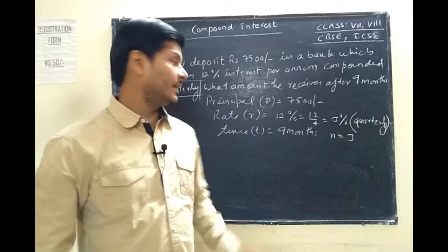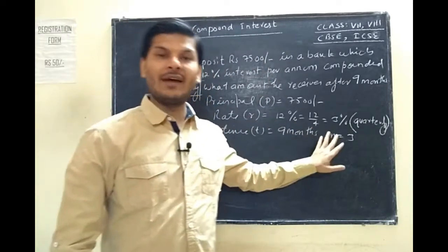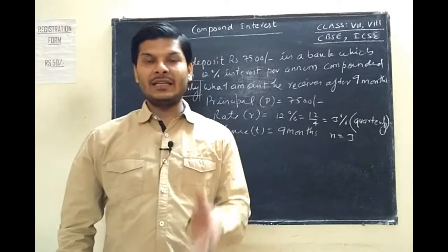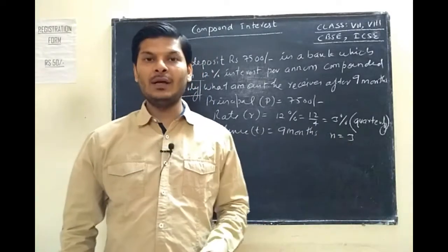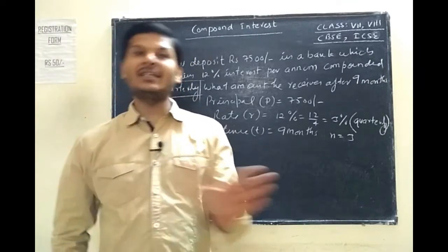So in the quarterly case, divide the rate by 4. For time, check the given time—9 months is given—so how many times does 3 months come in 9 months?